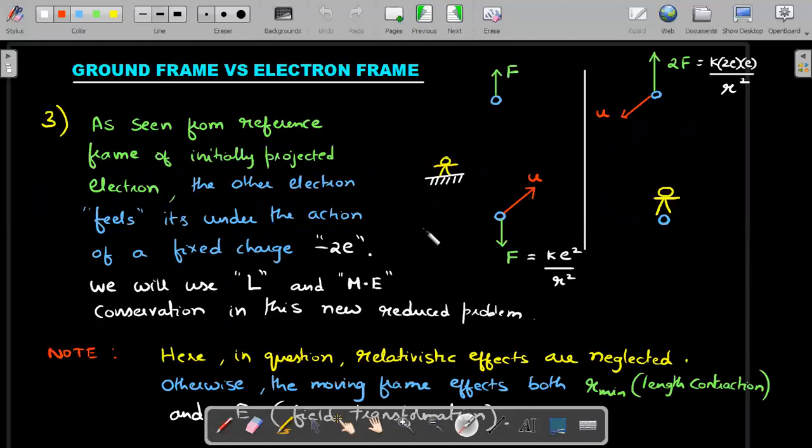As we move along, now in the third point as a concept, let's try to check ground frame versus electron frame of reference, how it looks like in the motion. You could see I've removed E₀, there is no E₀ in my problem anymore.